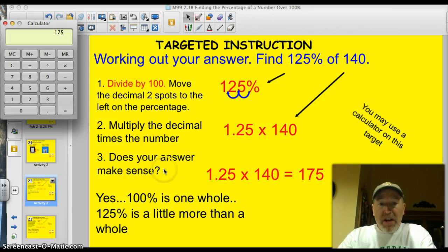Number three, does it make sense? I continue to ask that question. Well, yeah. 100% would be one whole, and that would be 140. And 125% is a little more. Our answer, 175, is a little more than 140. So we're ready to move on.